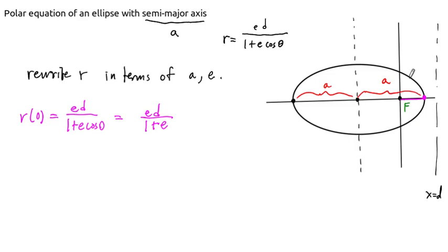And then on the other hand, this point right here corresponds to theta equal pi. And that entire length right there is the radius that it takes to get out here. So r of pi is e times d over 1 plus e cosine of pi. But cosine of pi is negative 1. So this is e times d over 1 minus e.